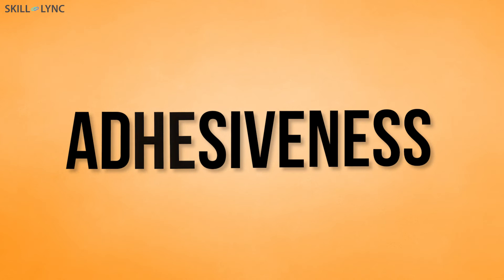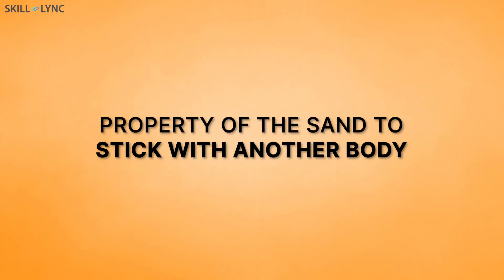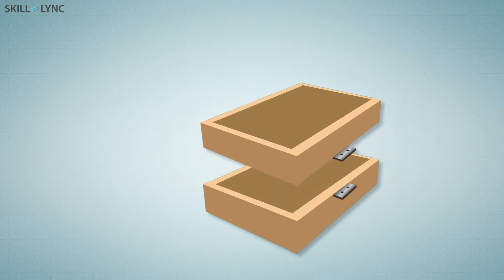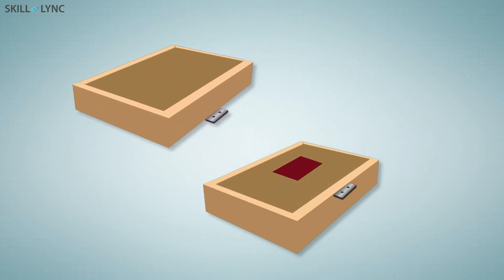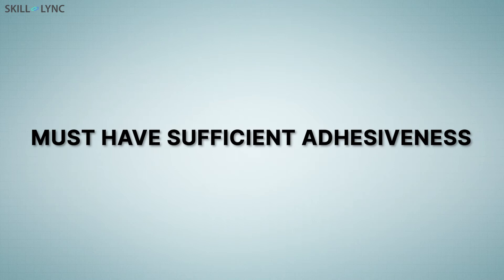Adhesiveness is another property of molding sand. It is the ability of the sand which allows it to stick with another body. The sand must stick with the molding box and avoid falling out of the box when it is removed. For this purpose, it must possess sufficient adhesiveness.